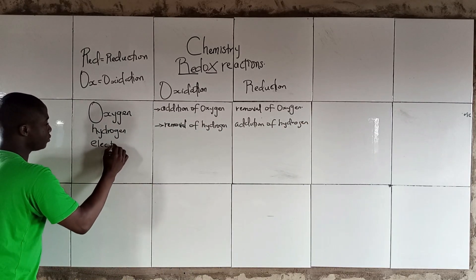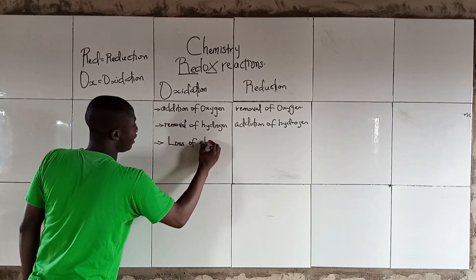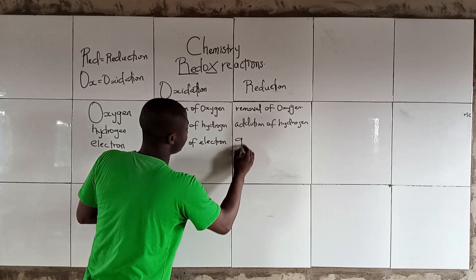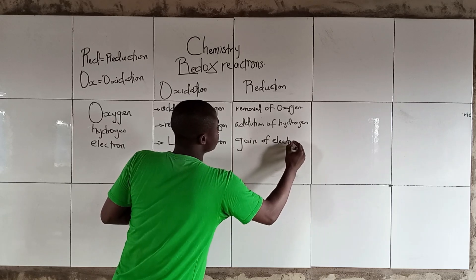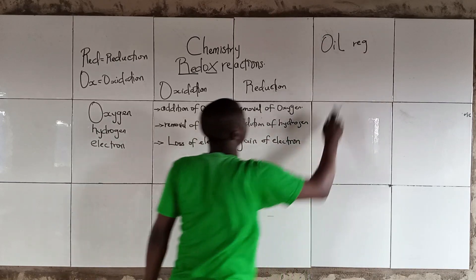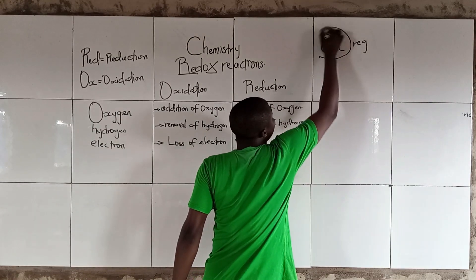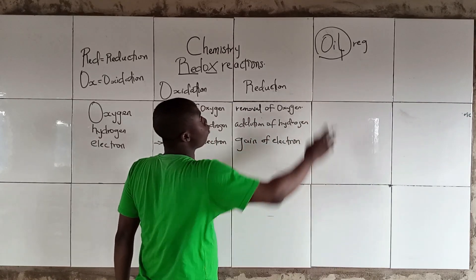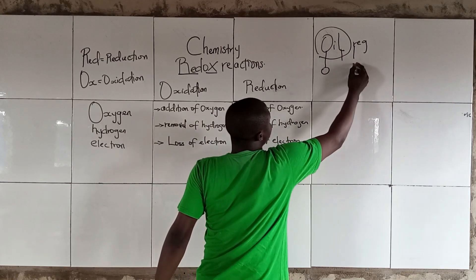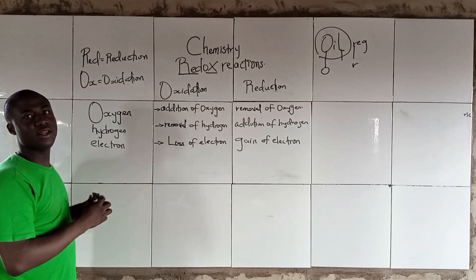Based on electron, oxidation is loss of electron. And based on electron, what is reduction? Reduction is gain of electrons. So we have the mnemonic OIL RIG — Oxidation Is Loss of electrons, Reduction Is Gain of electrons.